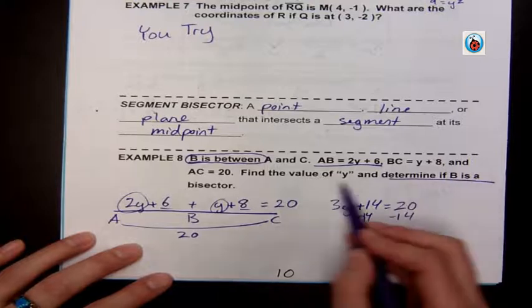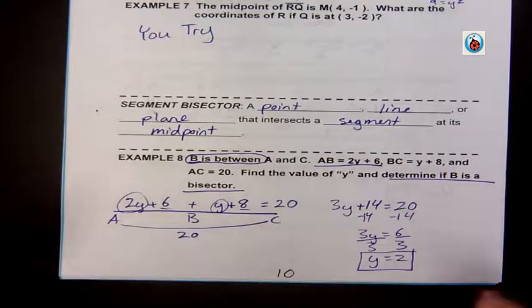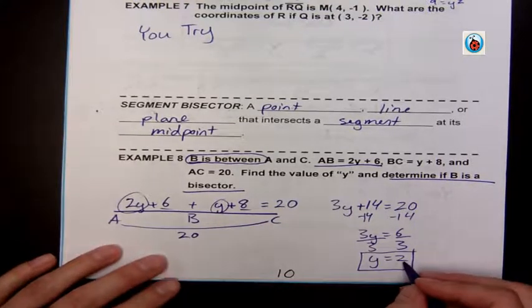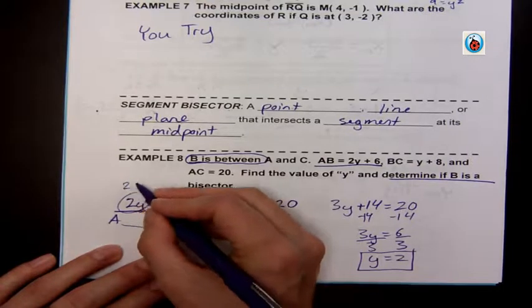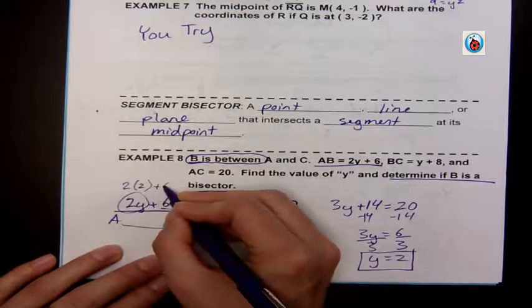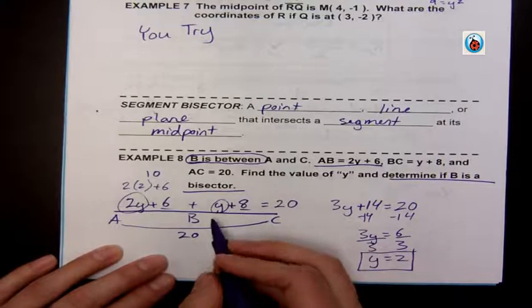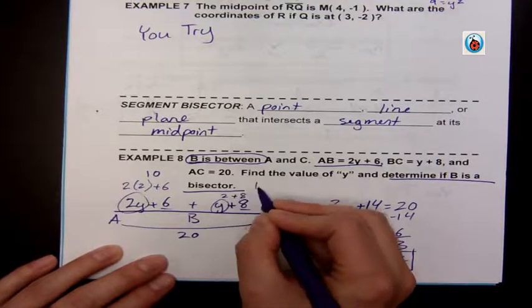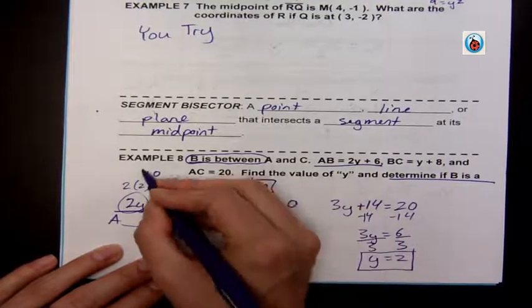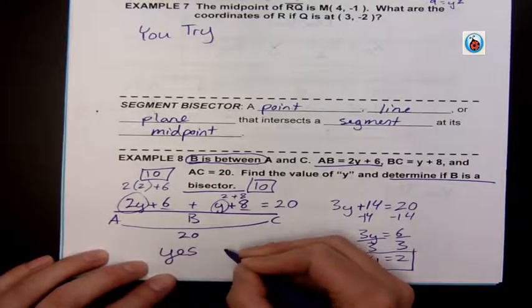Now, to determine if B is a bisector, I have to plug it back in and do 2 times 2 plus 6, which gives me 10, and then 2 plus 8, which gives me 10. Does 10 equal 10? Yes, it's a bisector.